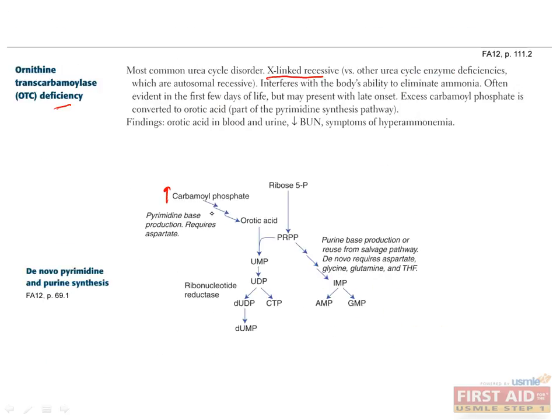The excess carbamoyl phosphate will be converted to orotic acid in the pyrimidine synthesis pathway, so manifestations of ornithine transcarbamylase deficiency include orotic acid in the blood and urine, decreased BUN, since urea can't be formed without this enzyme, and the symptoms of hyperammonemia that I talked about in the last slide, since ammonia can't be converted to urea. You'll also see high orotic acid in the urine in orotic aciduria, which is caused by a defect in one of the enzymes that converts orotic acid to UMP.